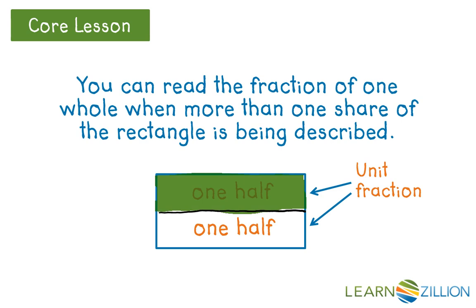Now if we shade in some of our whole, we can show how much is shaded by describing a fraction. You can see there are two equal pieces, each one-half, and one of them is shaded. So we can describe the shaded part as one-half of the rectangle is shaded. Then if we shade in the other part, we can still see the rectangle was partitioned into halves, but now two of the halves are shaded. So we can say two-halves of the rectangle are shaded.